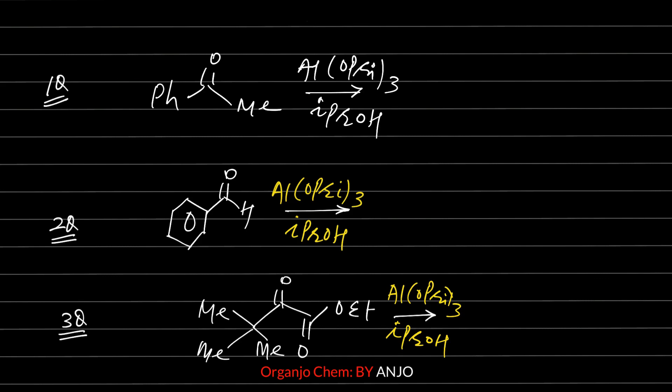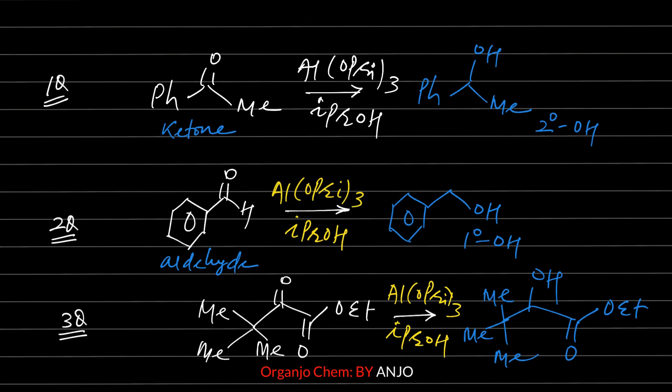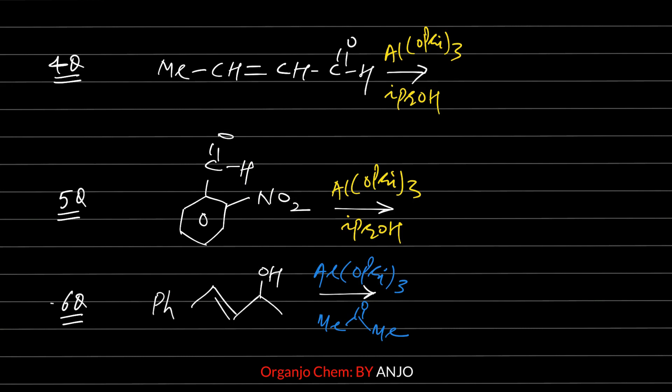I hope you solved those questions. These are the answers. All three questions are of MPV Reduction, where carbonyl compounds react with aluminum isopropoxide in the presence of isopropanol to form the corresponding alcohol — meaning aldehyde gives a primary alcohol and ketone gives a secondary alcohol. Notably, no other group such as C=C, C≡C, nitro, or ester is affected, so in question 3 the ester group will carry forward as it is. The next 3 questions are now displayed — please pause the video and solve them. These are the answers.